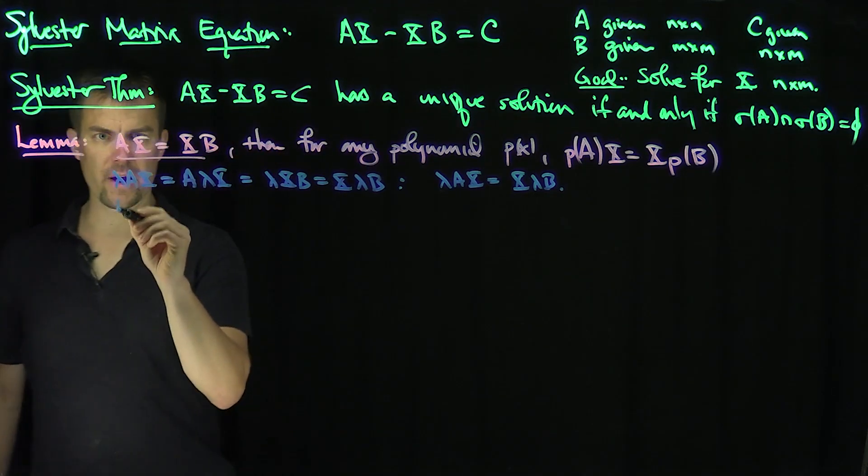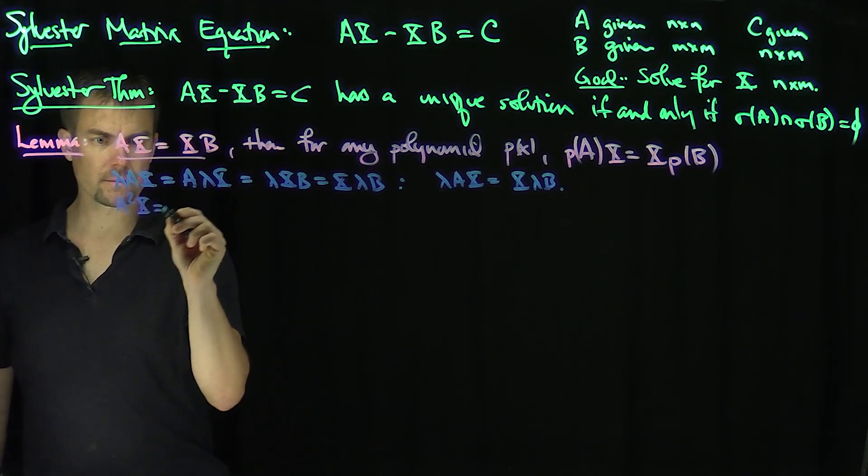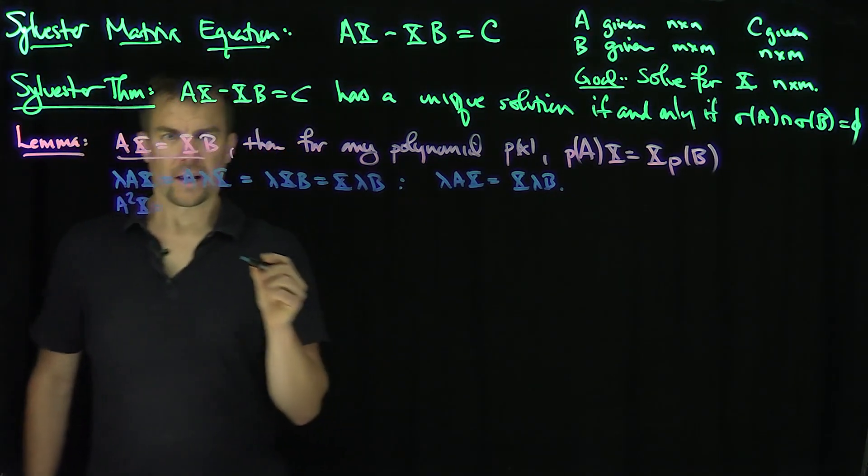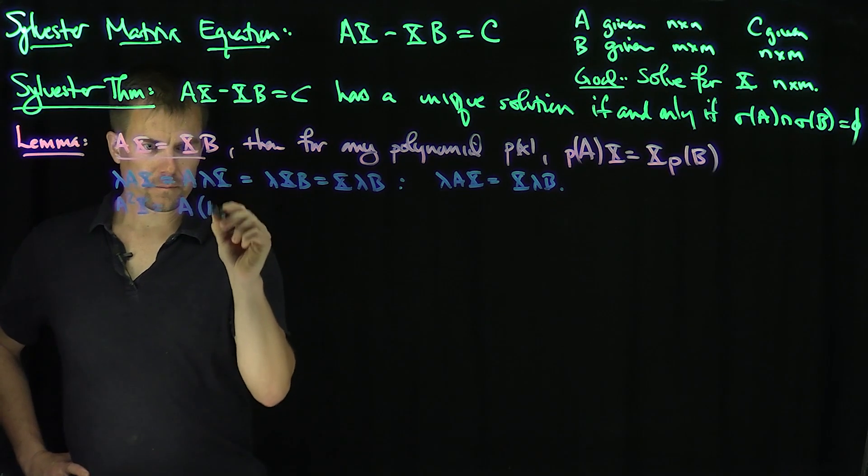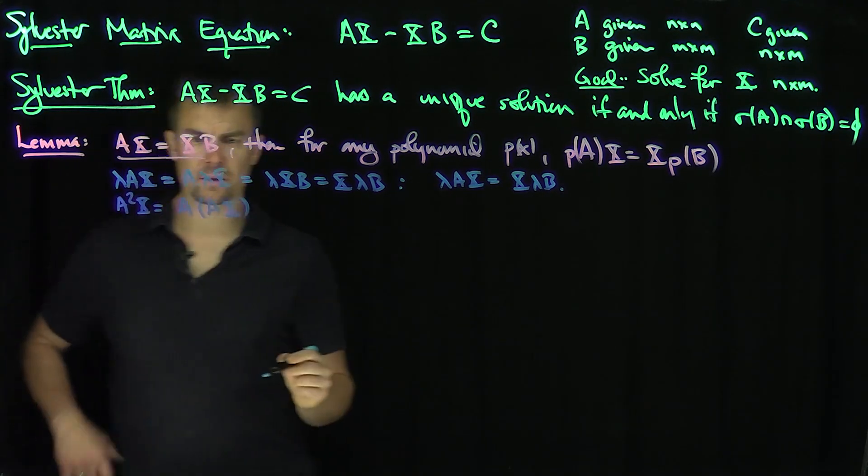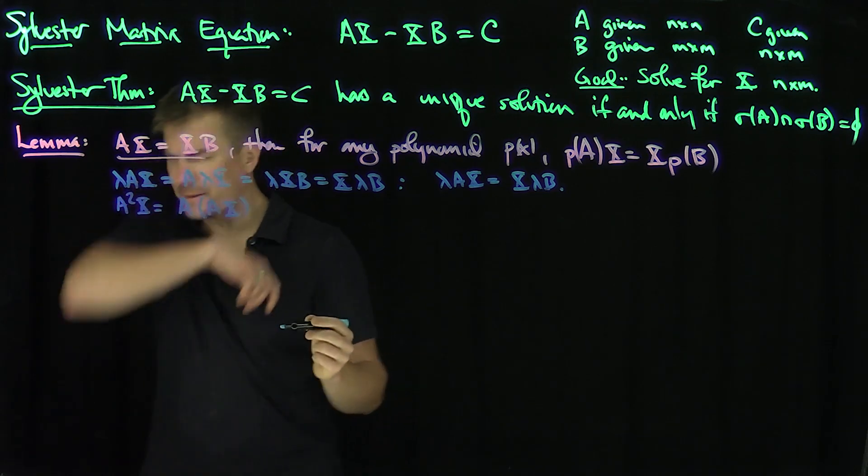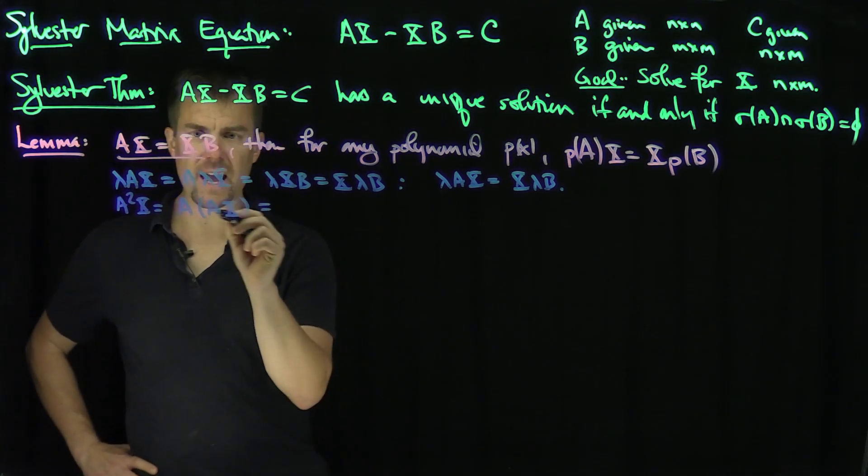Good. Now let's look at powers. Let's look at A squared X. A squared X is going to be AX. And what is AX going to be?